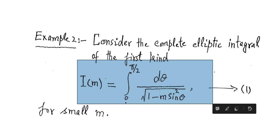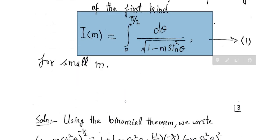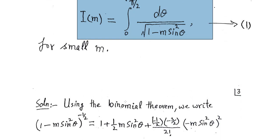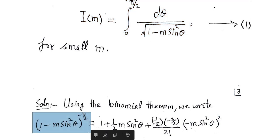In this method we expand our integrand in a Taylor series, then substitute its value and integrate term by term to get the final answer. Therefore, first of all we write the integral in expansion form. The integrand is 1 over √(1 − m sin²θ), which when taken to the numerator becomes (1 − m sin²θ)^(−1/2).